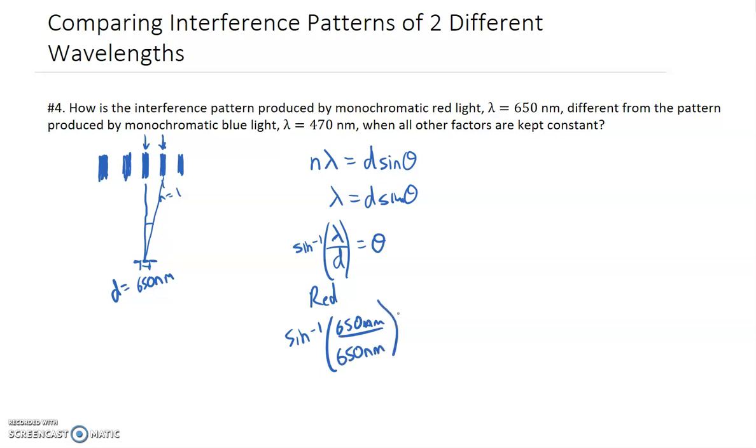I'm just picking 650 nanometers for simplicity's sake. We could have picked any number, but we're not trying to figure out what the exact angle is. We're trying to figure out how the angles are different.